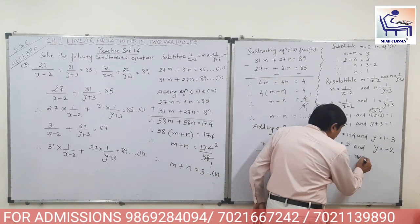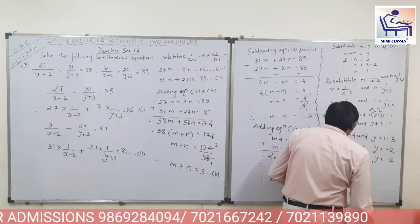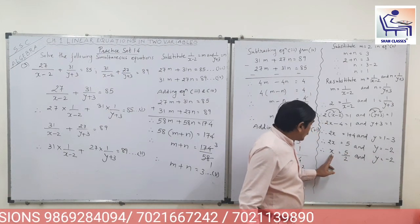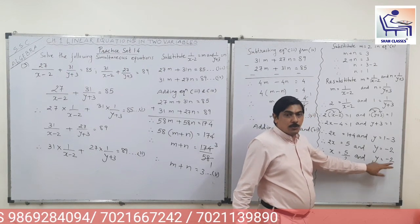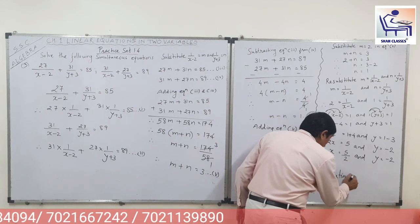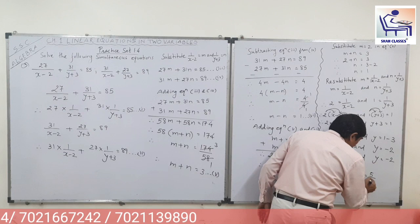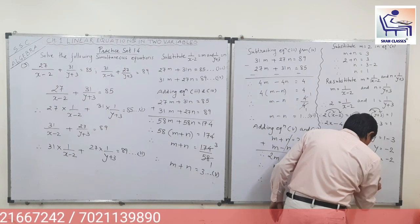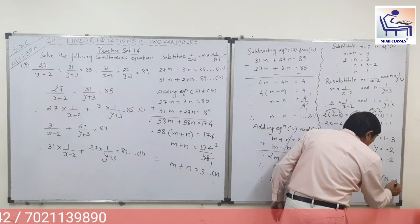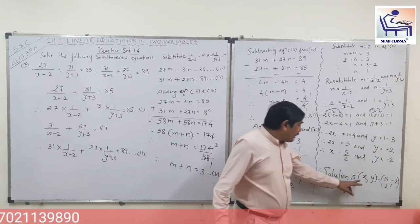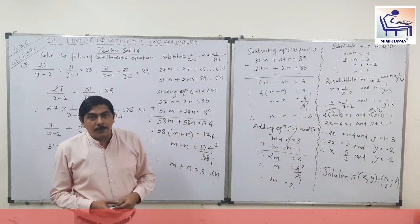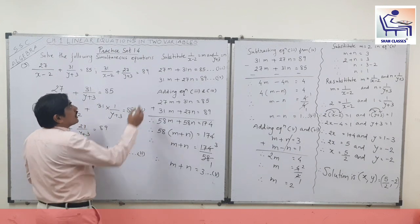We write both answers together. So we got the value of x as 5 upon 2 and y is equal to minus 2. Now we write the solution: x is equal to 5 upon 2 and y is equal to minus 2. I hope this is very clear.